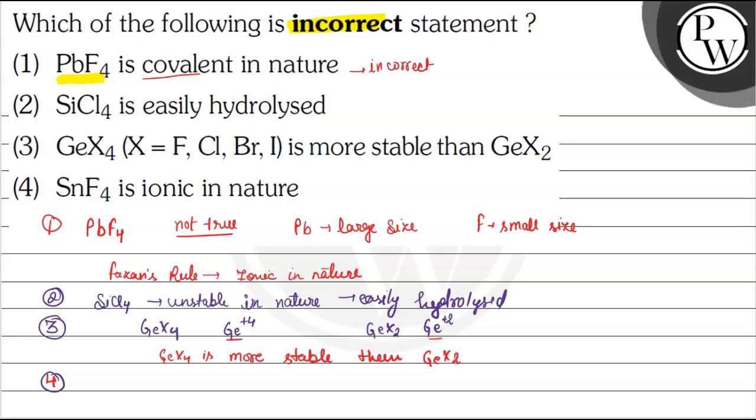Now move on to the fourth option: SnF4 is ionic in nature. This statement is also correct according to Fajan's rule. Here Sn is a very large atom and F is again small in nature.